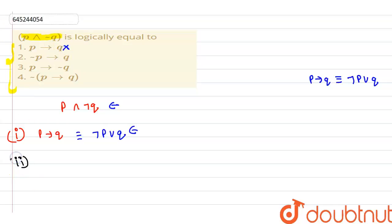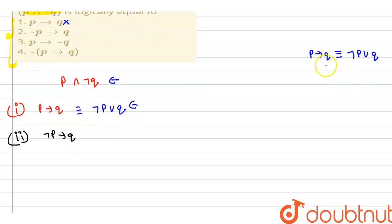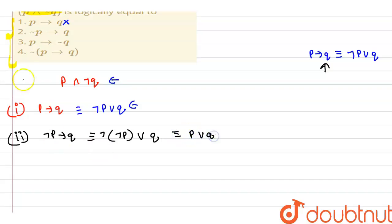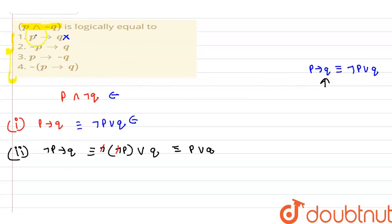Now we check option two: negation of p implies q. By the same property, this equals negation of negation p or q, which simplifies to p or q, since the double negation cancels out. This is also not equivalent to our original statement, so option two is wrong.